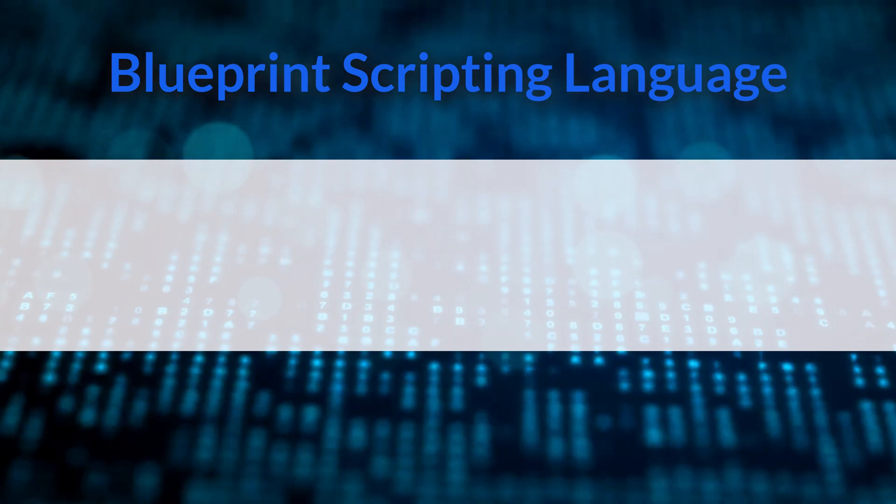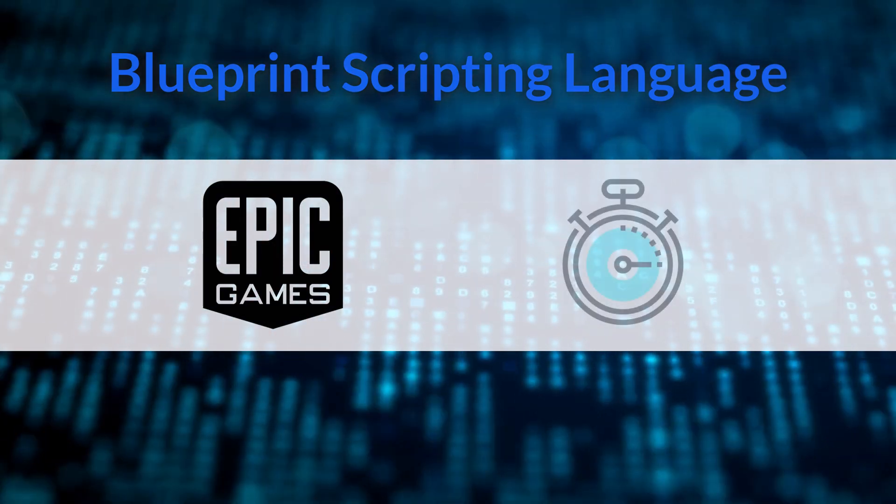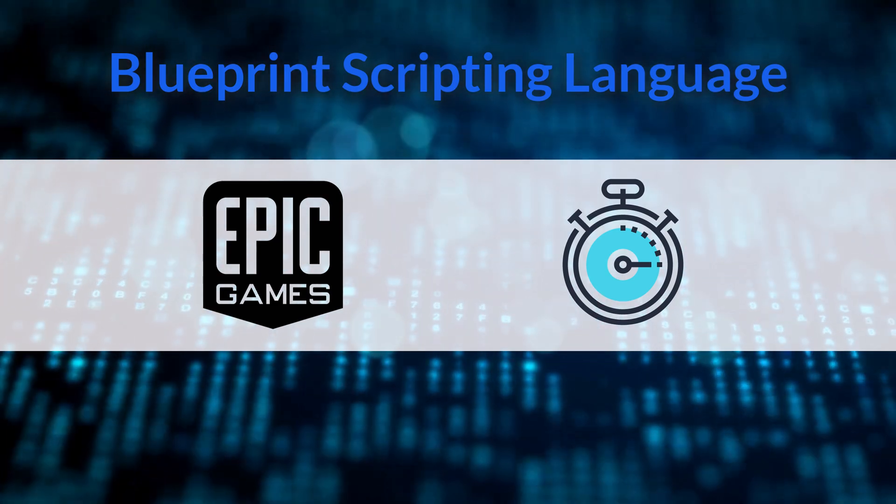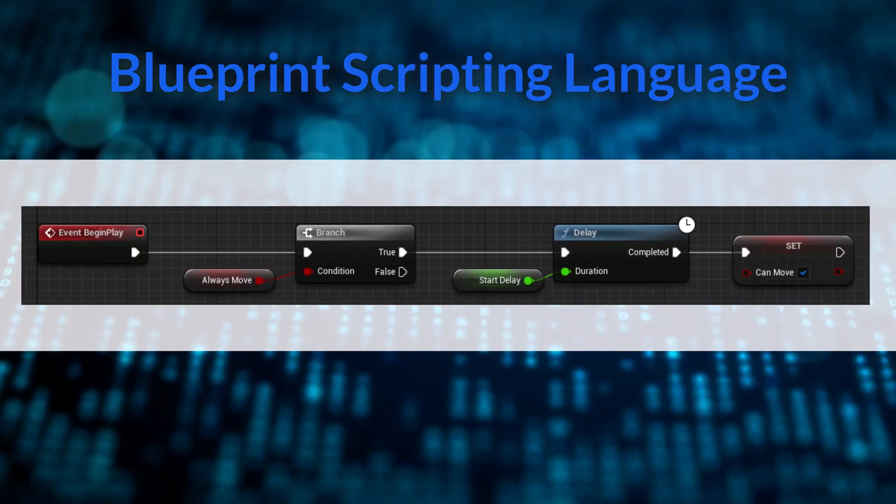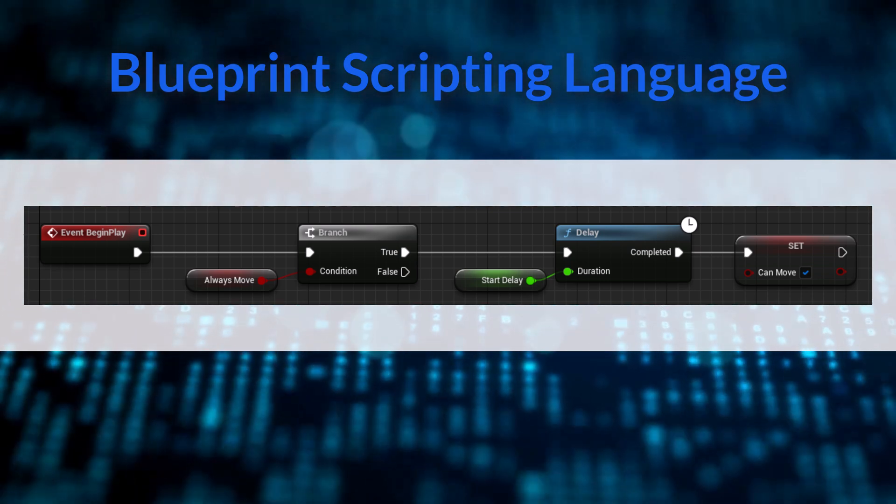Blueprints are a custom language made by Epic Games that allows for fast iteration inside the engine. Visual scripting means that you will be writing your code by using predefined nodes that you connect in a sequence.